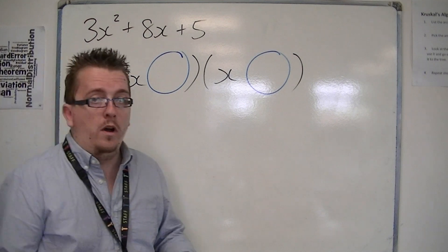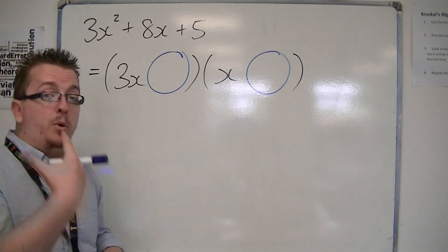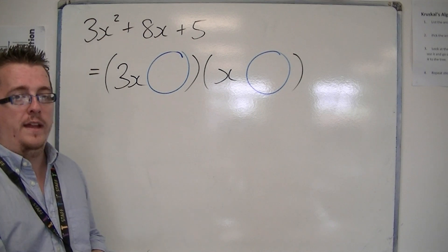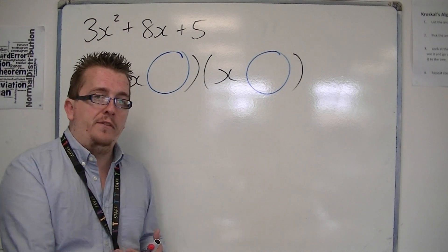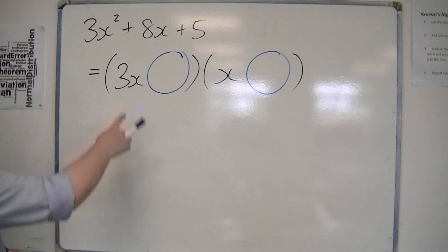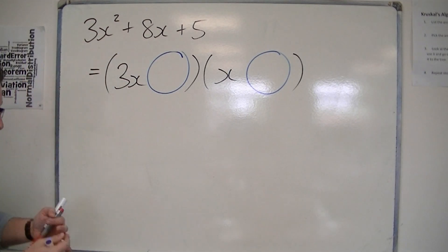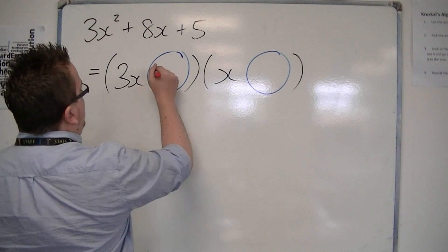Now, the only way that it's going to work to make 8x, to make positive 8x, would be plus 1 and plus 5. For them both to be positive. Otherwise, we will get a negative minus 8x if we're not careful. So they need to be positive. We can identify that.